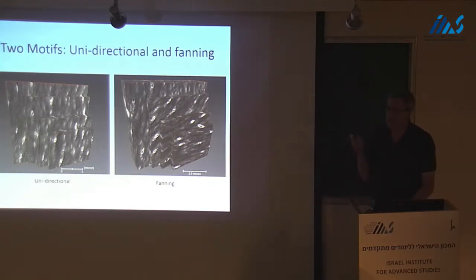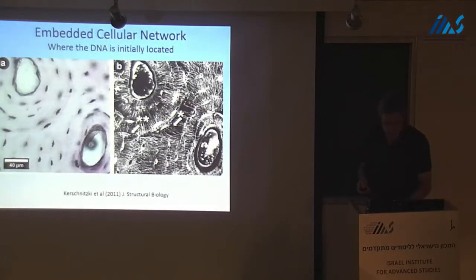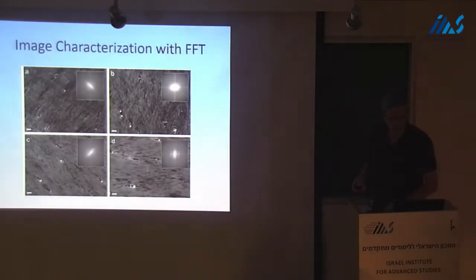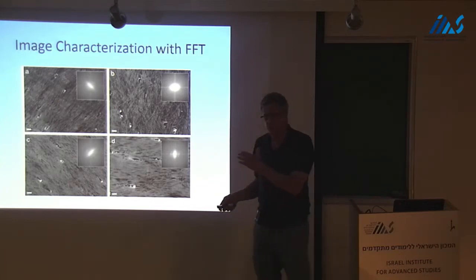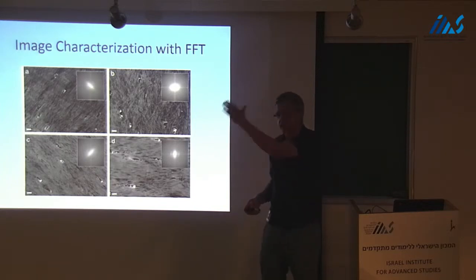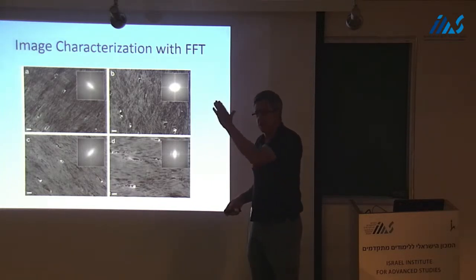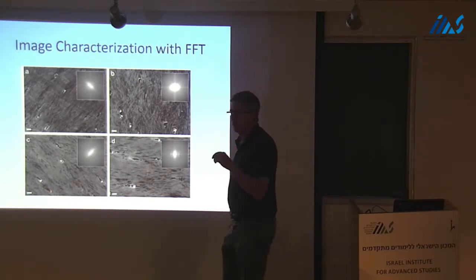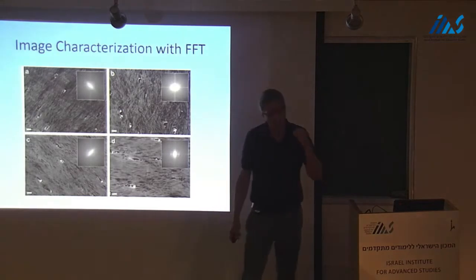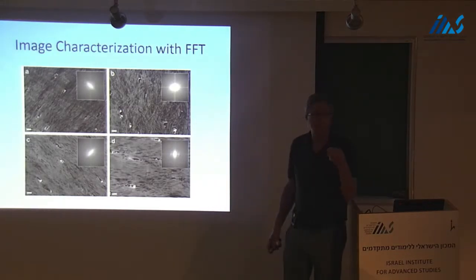But one of the powerful aspects of this technology is that you can use fast Fourier transform to quantitatively define how well aligned the collagen fibrils are and in which direction. Now, you don't have to eyeball this thing and say it's in that direction. You can plot the directions, or the mean direction, and the angular dispersion. As soon as it becomes chaotic, you see from the fast Fourier transform what's going on.